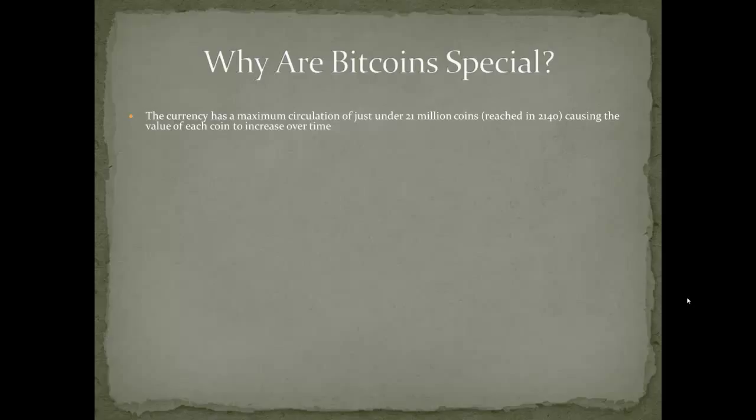Bitcoin behaves like a commodity with a maximum limit on how much can exist, enforced by those open source algorithms — no one party can enforce it, it's enforced globally. So it's an intrinsically deflationary currency: it actually becomes more valuable over time, as opposed to things like the dollar or the euro which become less valuable over time. Therefore there's an incentive to save.